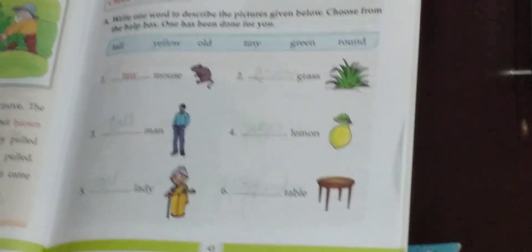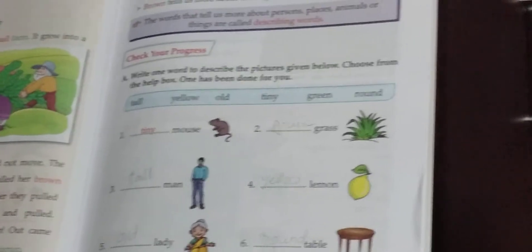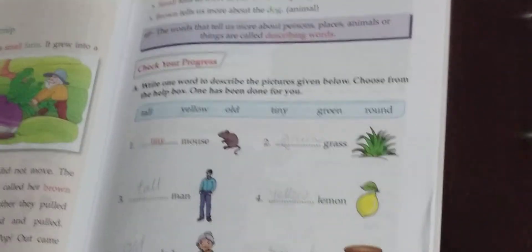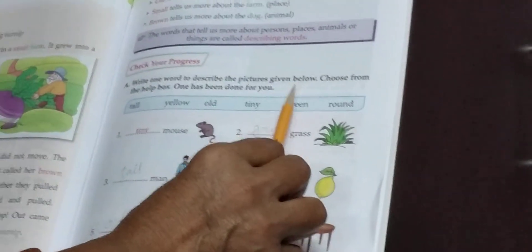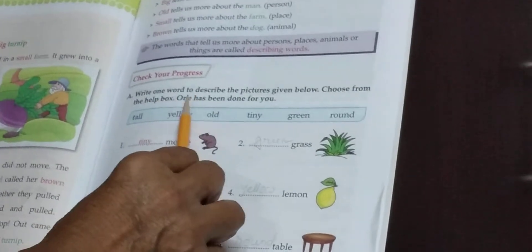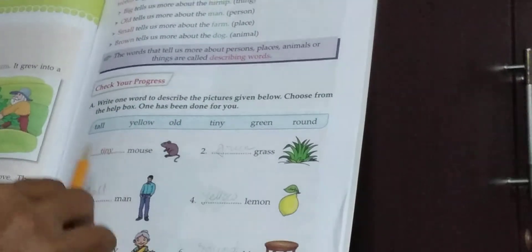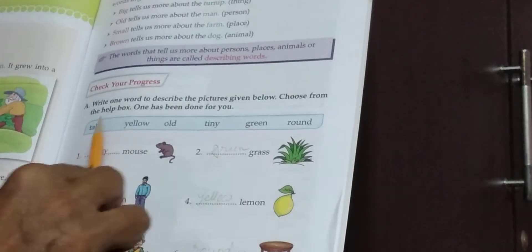What is describing words? The words that tell us more about persons, places, animals and things are called describing words. Next question. Write one word to describe the pictures given below. Choose from the help box. One has been done for you. Student, look at the picture on page 43. Look at the box: tall, yellow, old, tiny, green, round.